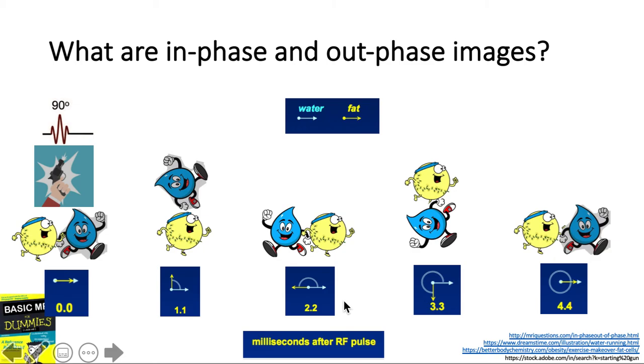This effect or signal drop in the out-of-phase image would only occur if they occupy the same voxel. An example of this is intracellular fat in the fatty liver. It's end of part 3, let's have our post-test now.